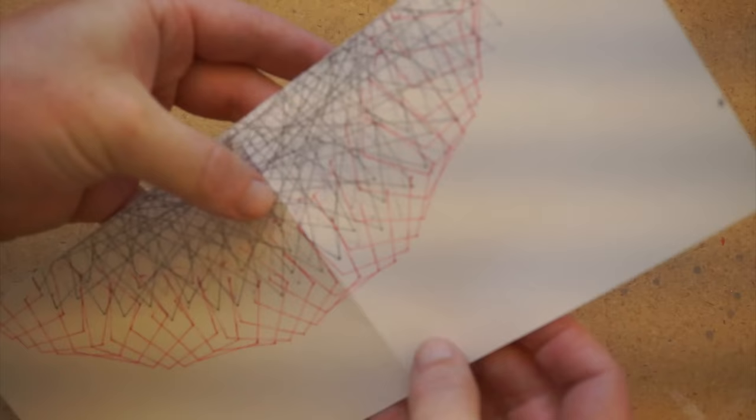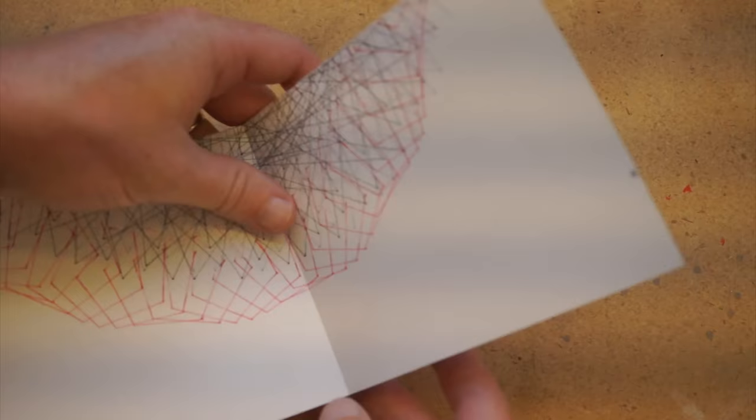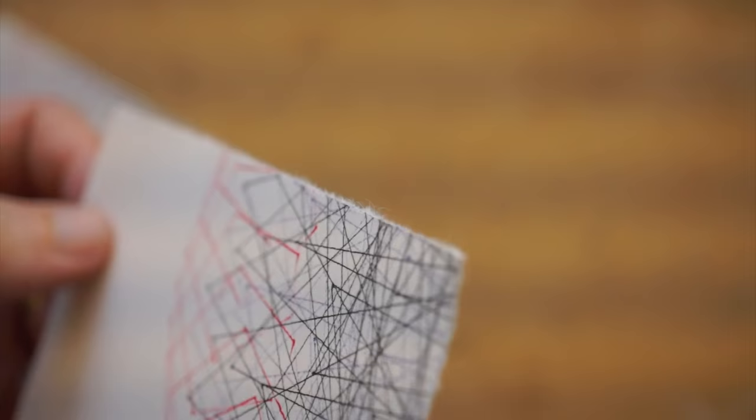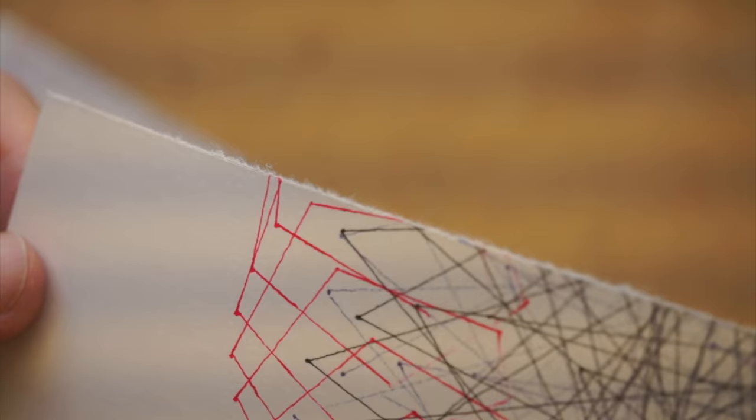This also helps with tearing paper if you want a more natural edge. You give it a good score or two, fold it down, and tear it. It's also handy for shaping cardboard.